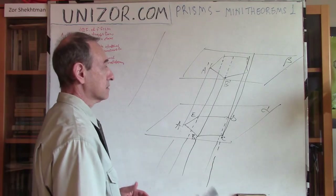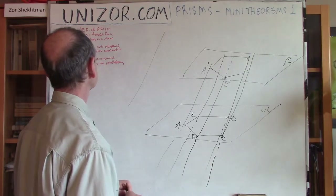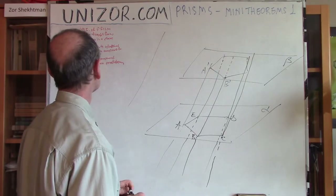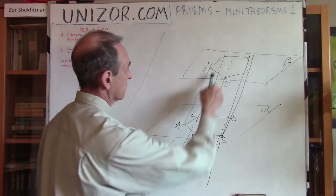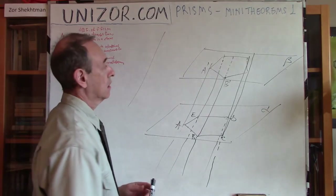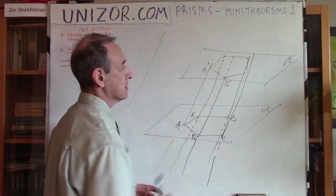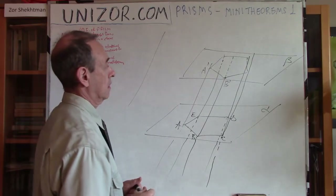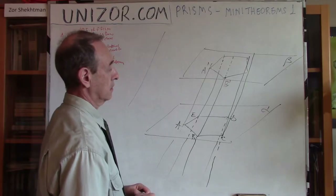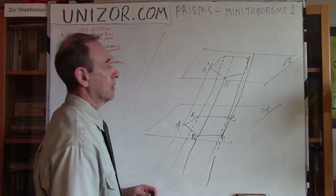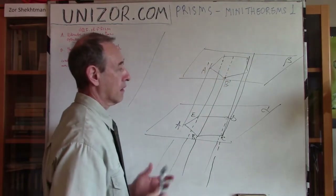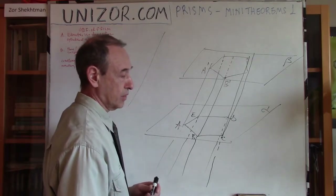Now the second theorem: every side face of a prism is a parallelogram. That's basically a very easy consequence of whatever we were just talking about. Every side is a parallelogram and the opposite bases are congruent. These are very simple properties.